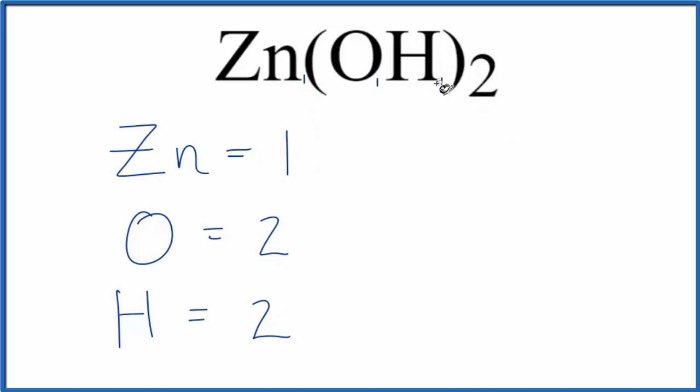Sometimes you're asked to figure out how many atoms of, say, oxygen there are in 1 mole of zinc hydroxide. To do that, you would just multiply this number 2 by Avogadro's number. So 2 times Avogadro's number, this would give you the number of oxygen atoms in 1 mole of zinc hydroxide.